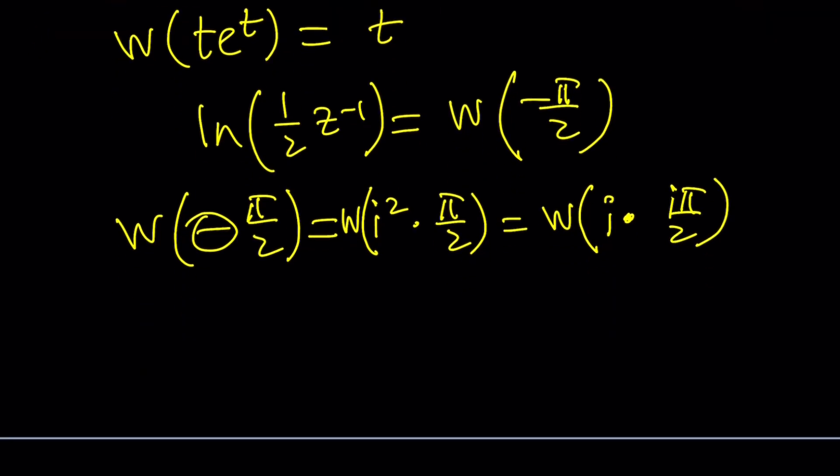If you think about the argand plane and how would you represent i as a complex number in polar form, you would say e to the power iπ over 2, right? Because that's the argument. Make sense? Yes. Okay. So, what does that mean? It means that i can be written as e to the power iπ over 2.